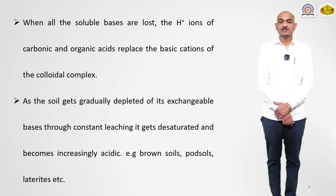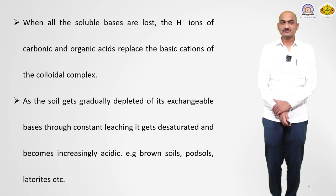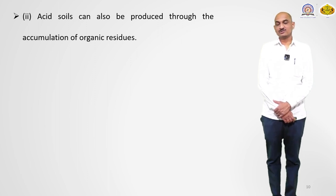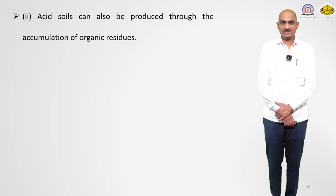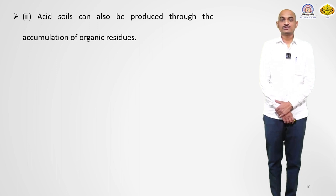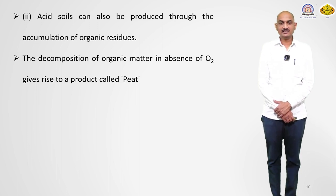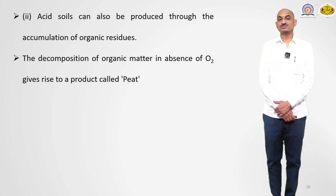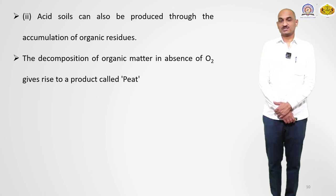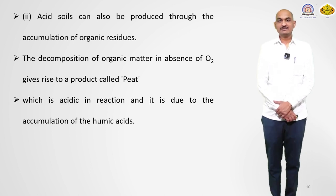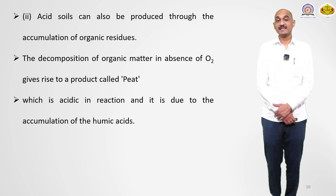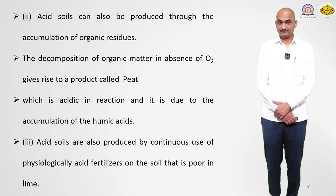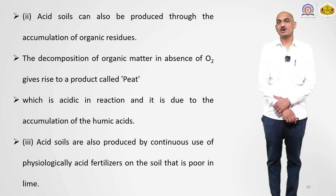For example, in the brown soil or podzols, these are examples of such increasing acidity of soil. The second formation method can be produced through the accumulation of organic residues. The decomposition of organic matter in the absence of oxygen gives rise to a product called peat, which is acidic in nature. It gives acidic reactions due to the formation or accumulation of humic acids. This is the second method of how acidic soil is formed.